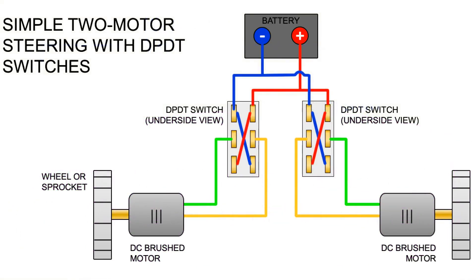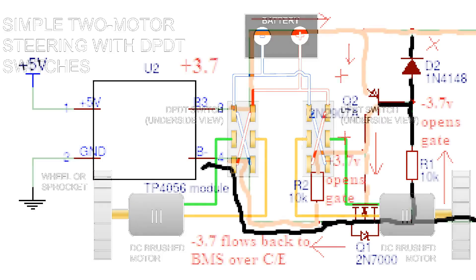There should be no difficulty in determining polarity because the manufacturer marks plus and minus on the housing next to the terminals or directly on the terminals. In addition, they are marked with colors — plus is red, minus is blue or black. Protective caps on the terminal wires also follow this color coding. The battery itself may be labeled with the letters L or R: L indicates reverse polarity and R indicates forward polarity.